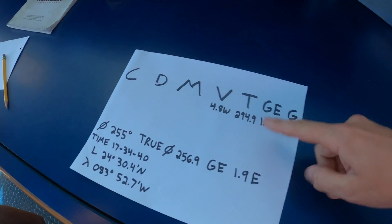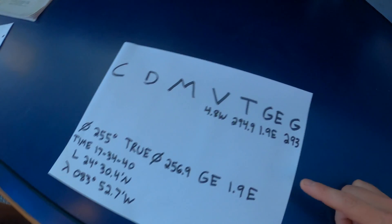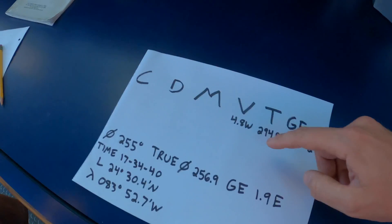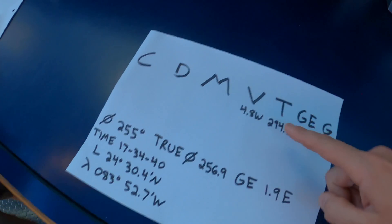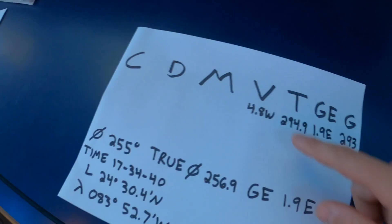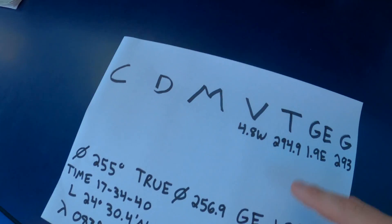We'll take the true heading and we'll apply the variation to get our magnetic heading. So the variation was 4.8 west.